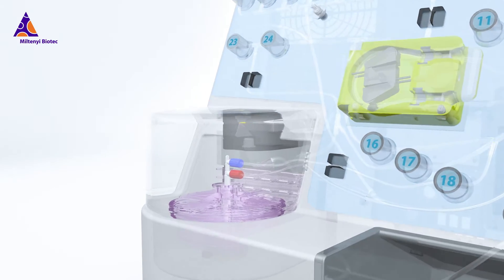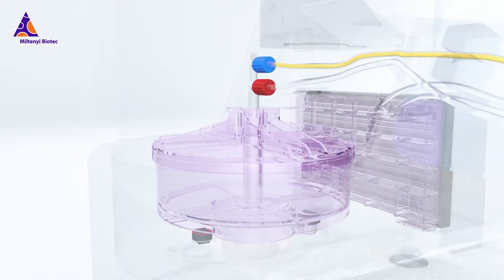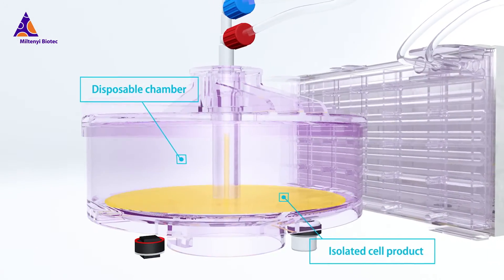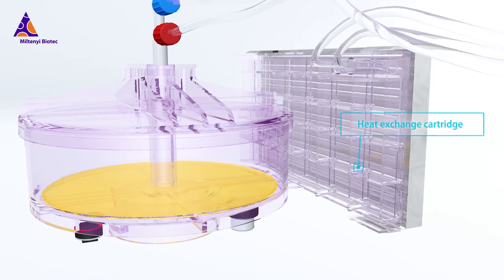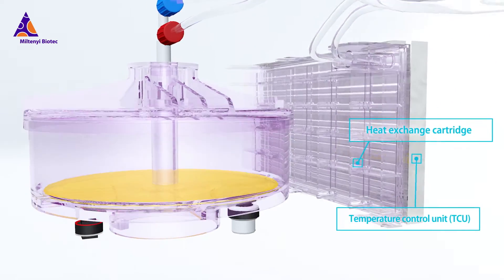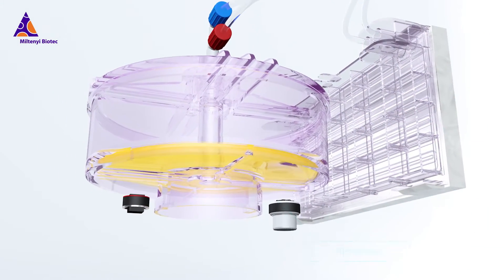Automated cell expansion occurs in the disposable cultivation chamber. The chamber is part of the Clinimax Prodigy tubing set, which is designed to maintain a closed system for cell processing.